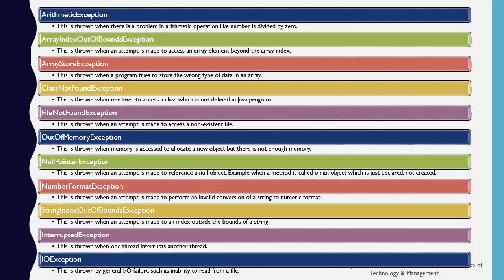NullPointerException is thrown when an attempt is made to reference a null object — for example, when a method is called on an object that is declared but not created using the new keyword. Since memory is not allocated without the new keyword, it is just a reference, and using it raises a NullPointerException. NumberFormatException is thrown when an attempt is made to perform an invalid conversion of a string to a numeric format — for example, a string like "57" that cannot be properly converted raises NumberFormatException.